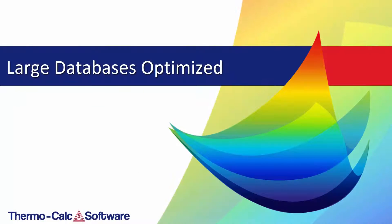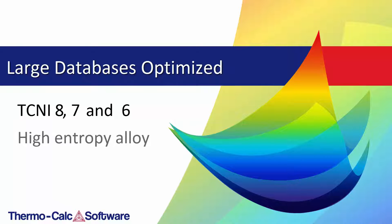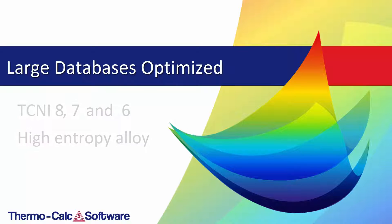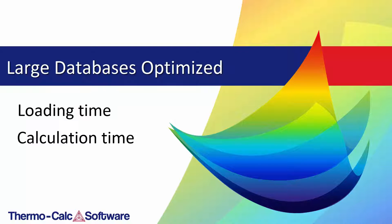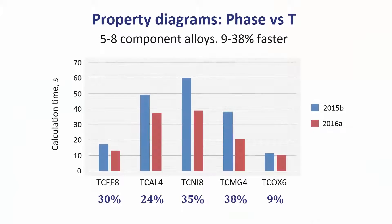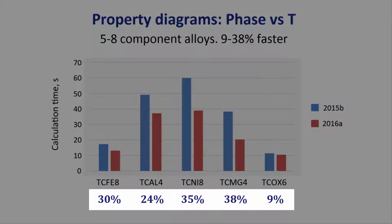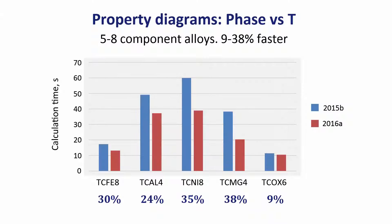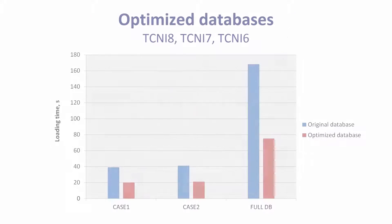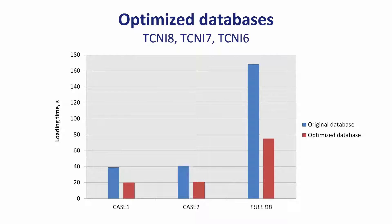The large databases TC-NICL-8, 7, and 6, as well as the High Entropy Alloy Database, have also been optimized, improving both loading time and calculation time. Benchmarking on various databases showed that property diagrams with phase fraction as a function of temperature were up to 38% faster in Thermo-Calc 2016a when compared to Thermo-Calc 2015b.